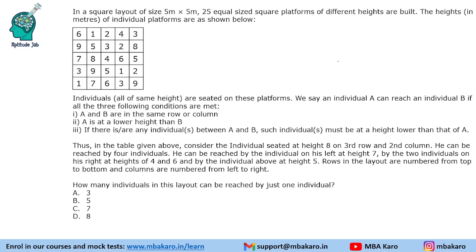Individuals of all the same height are seated on these platforms. We say an individual A can reach B if the following conditions are met: they are in the same row or column, A is at a lower height than B, and if there are any individuals between A and B, such individuals must be at a height lower than that of A.